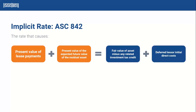In addition to that, the rate that causes the present value of the payments plus the present value of the expected future value of the residual asset — which is your residual value, the value expected at the end of the lease term — that needs to equal the fair value of the asset. This is unique to ASC 842, minus any related investment tax credit. Those tax credits are going to be taken out of that fair value. Then the deferred initial direct costs — things like legal fees and administrative costs that would not have incurred if the lease hadn't existed.